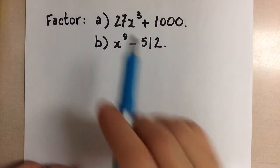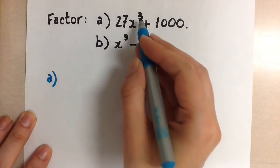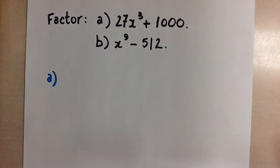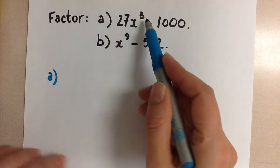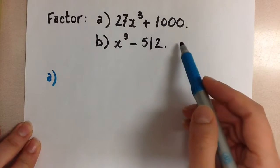So for our first one, A, we have 27x cubed plus 1000. In order to be sure that this is a sum of cubes, we want to rewrite the first term as a cube with a base, and the second term as a cube as well.